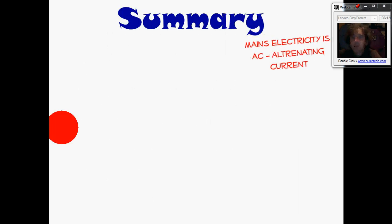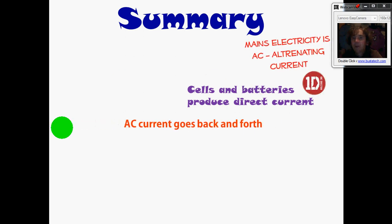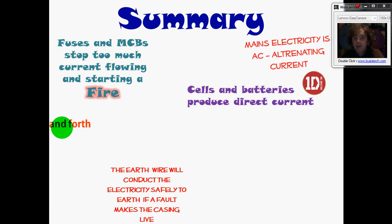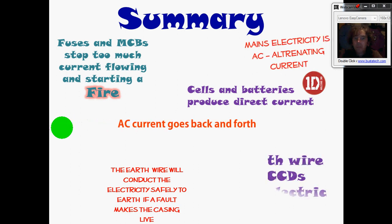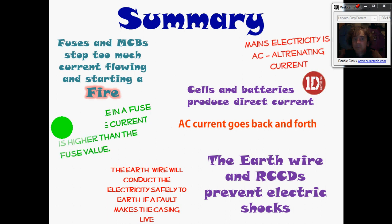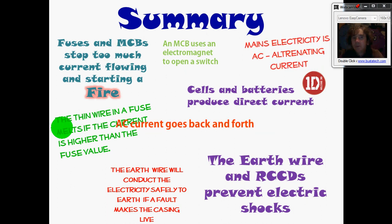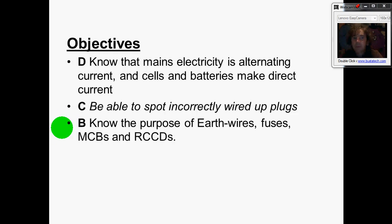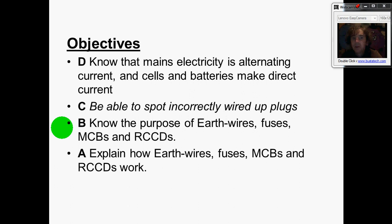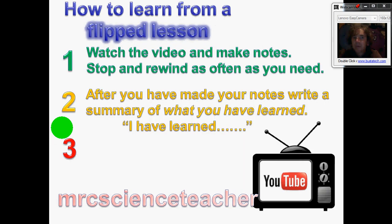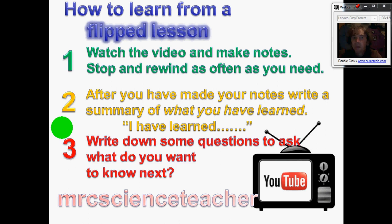Quick final summary. Alternating current goes back and forth. Cells and batteries produce direct current, which flows in one direction. Fuses and MCBs are there to stop too much current flowing and causing a fire if there's a fault in a circuit. The earth wire is there to stop you getting an electric shock. The fuse has a thin piece of wire in it — it's the weakest link. An MCB uses an electromagnet to open the switch. Now compare the objectives to what you've got in your notes, make sure you can meet all the objectives, write a summary of what you've learned, and write some questions about what you want to know next. Thanks very much — bye.